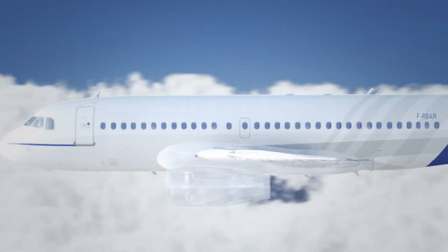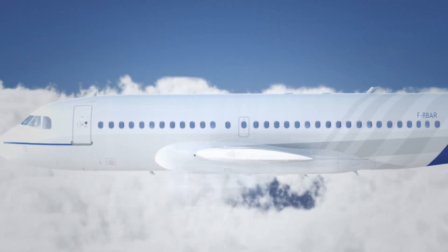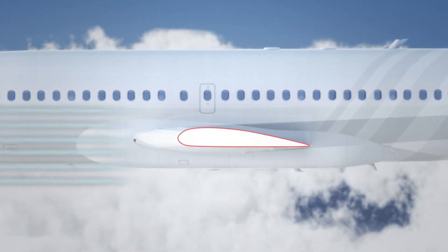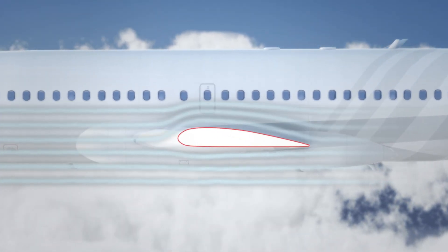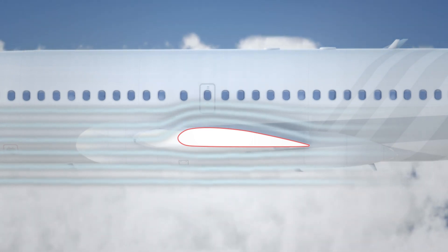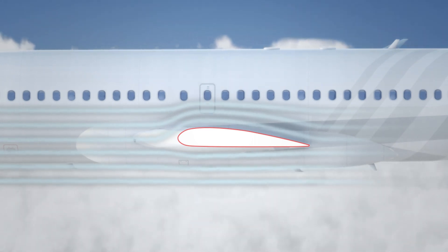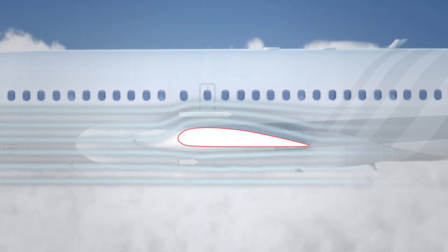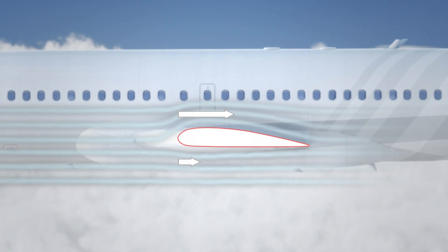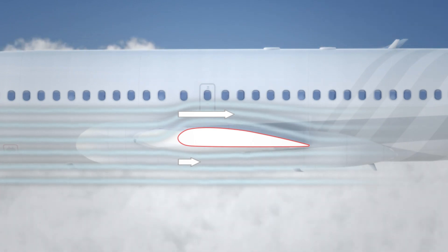This means that the air has a bit further distance to travel when going over the top of the wing. When the air travels a bit further, the speed goes up a bit, and the pressure comes down a bit. This means there's a higher pressure under the wing, which lifts the airplane from the ground.